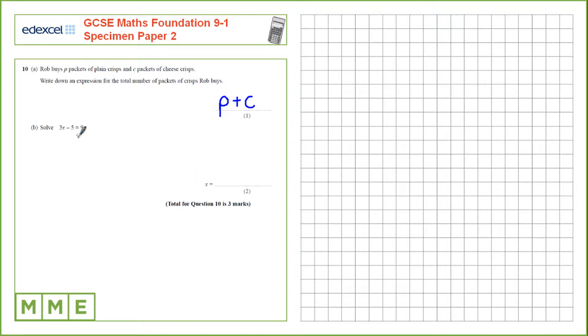We need to solve 3x minus 5 equals 9. For the first step, we're trying to get x on its own, so let's get rid of this constant. Let's do the opposite operation, so that's adding 5.